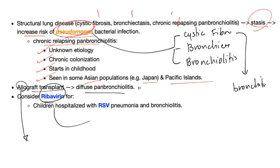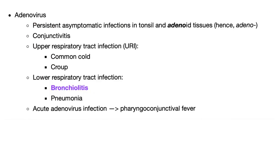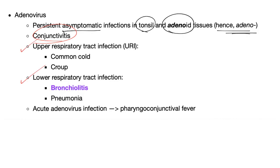Consider ribavirin for children hospitalized with RSV pneumonia or RSV bronchiolitis, because RSV is the most common cause of pneumonia and bronchiolitis in kids. The two main uses of ribavirin are: RSV and chronic hepatitis C. Adenovirus causes persistent asymptomatic infection in tonsils and adenoid tissue — that's why it's called adenovirus. Remember adenovirus — think conjunctivitis. It can cause upper respiratory infections such as common cold and croup, or lower respiratory infections such as bronchiolitis and pneumonia.